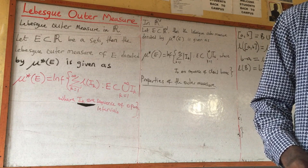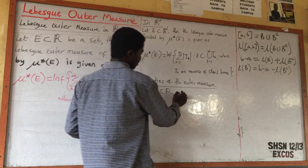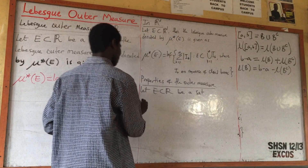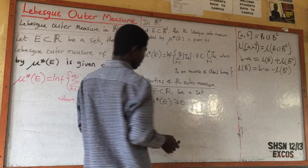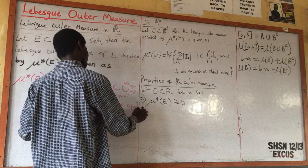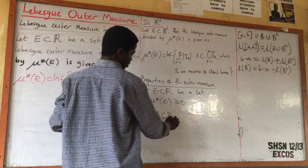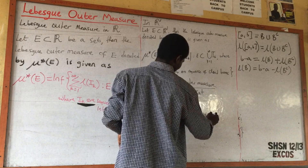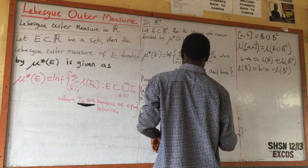Now we state the properties of the Lebesgue outer measure. Let E be in R. Property number one: the outer measure is non-negative. Property number two is monotonicity: if A is inside B, then the outer measure of A is less than or equal to the outer measure of B.